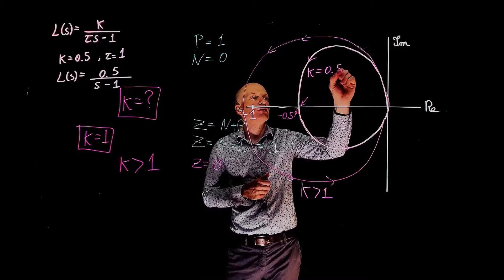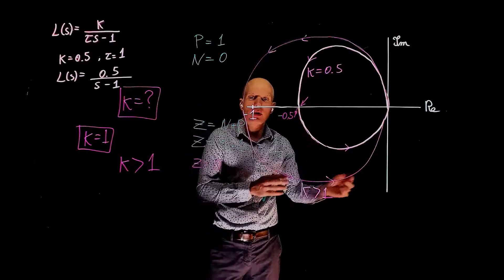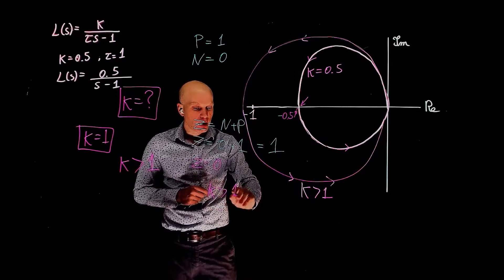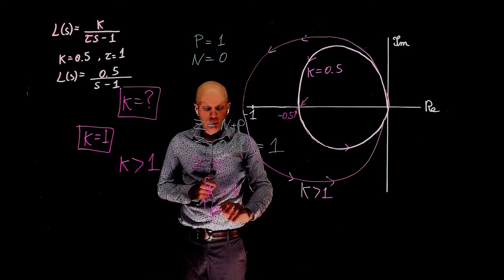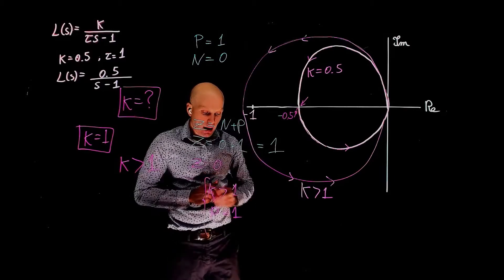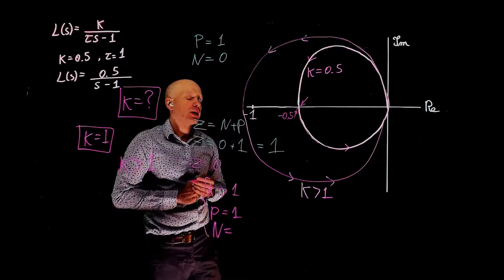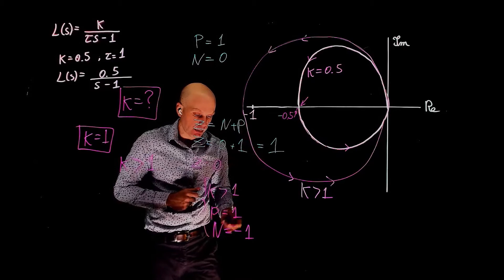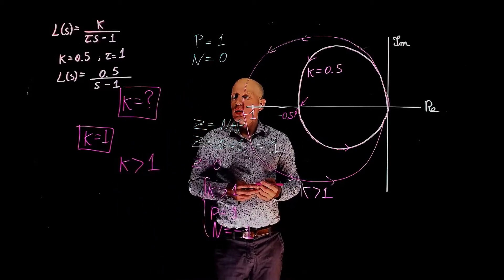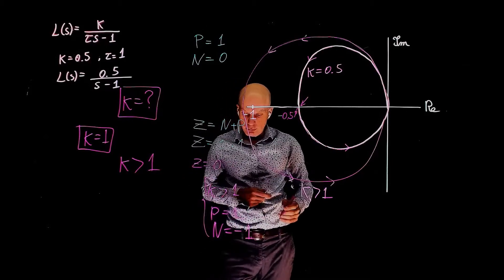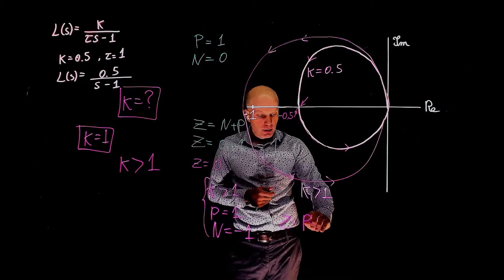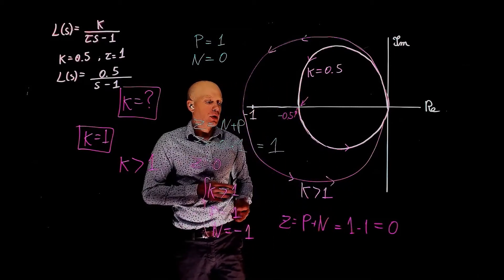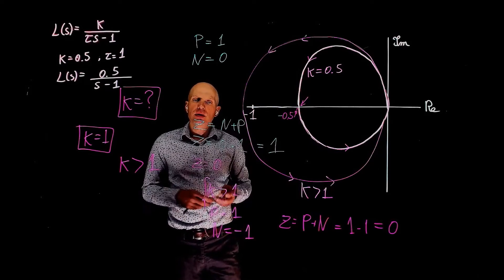The previous plot was obtained for k equals 0.5, where we were at negative 0.5. For k greater than 1, we are to the left of negative 1. Now when k is greater than 1, the number of unstable poles of the open-loop transfer function is still 1 at s equals positive 1, but now N, the number of encirclements of negative 1, is minus 1 — one encirclement in the counter-clockwise direction. Hence N equals negative 1, and Z equals P plus N, which is 1 minus 1 equals 0. The system becomes closed-loop stable, provided that k is greater than 1.